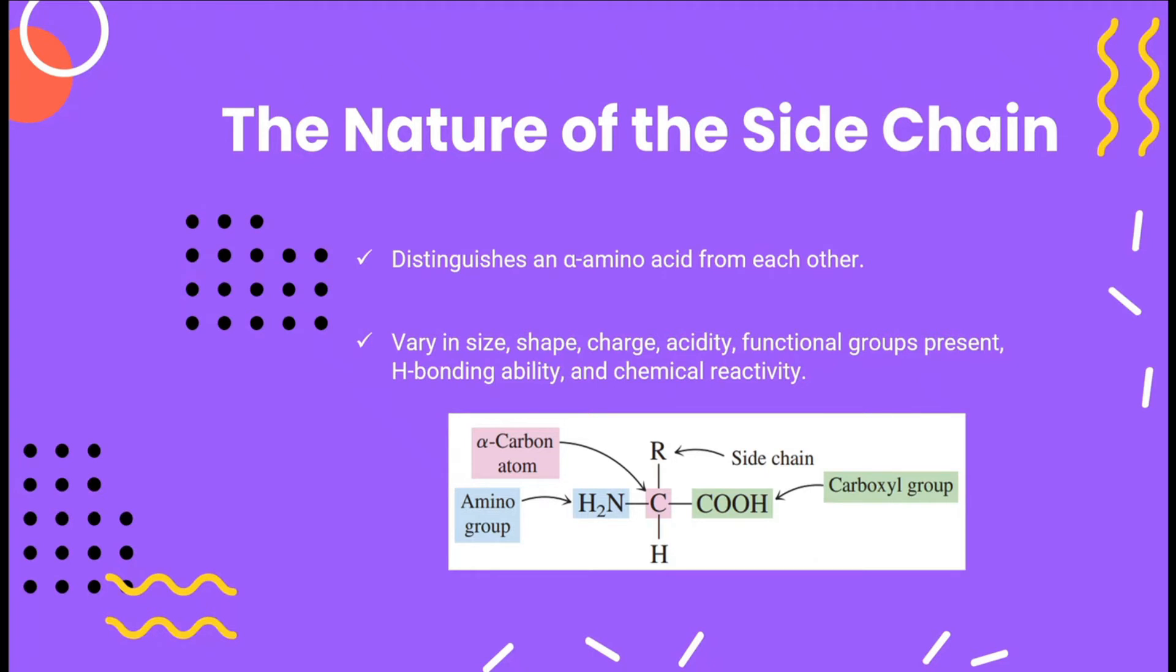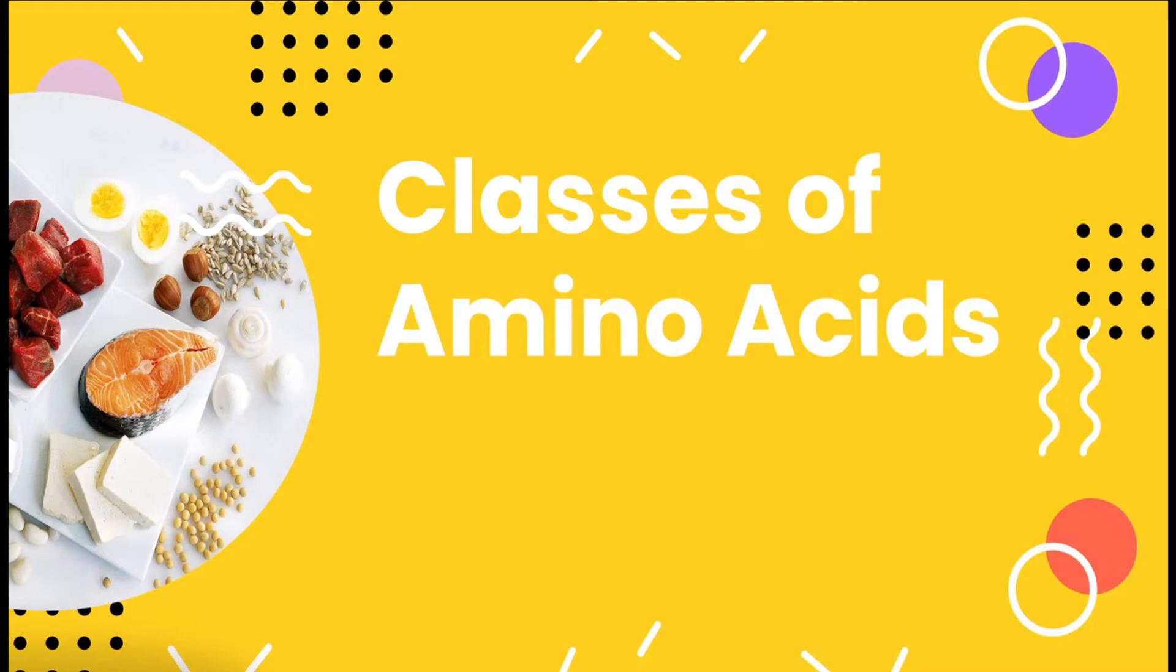The side chain, which is represented by the R, distinguishes an alpha amino acid from each other. It varies in size, shape, charge, acidity, functional groups present, hydrogen bonding ability, and chemical reactivity. The polarity of the R group is an important characteristic and is the basis for classifying amino acids.